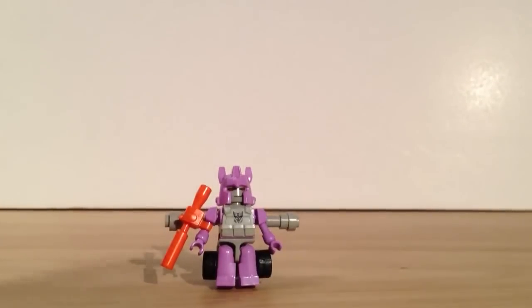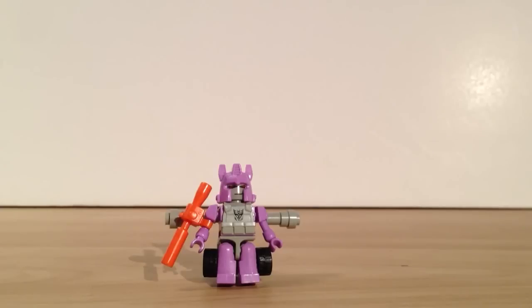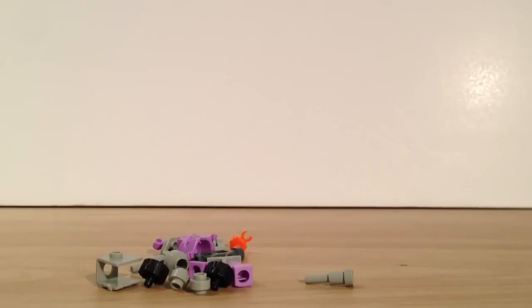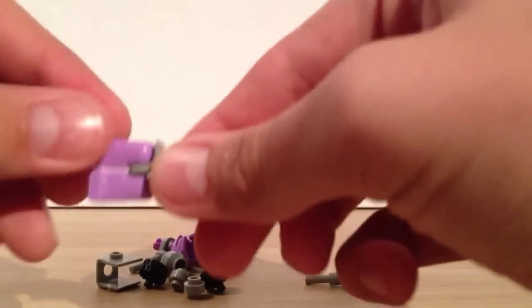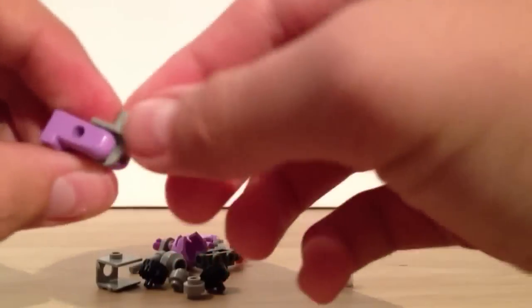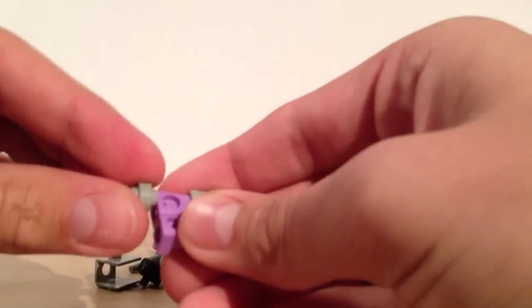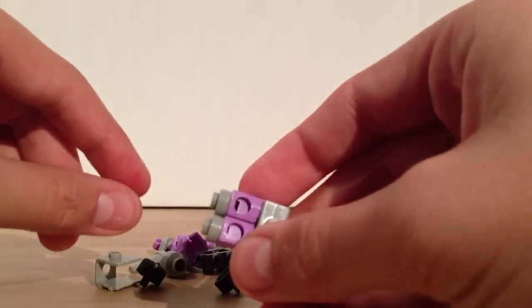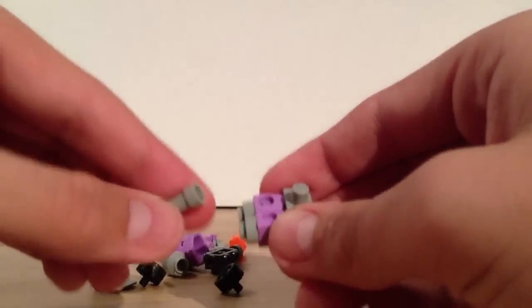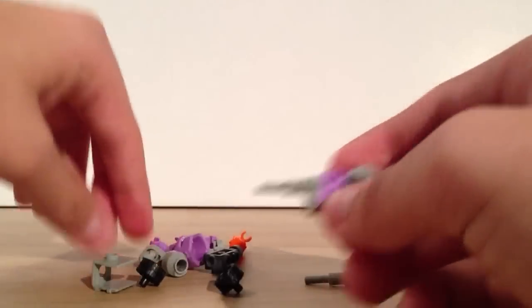Here we are back again, stripped down to the piece-by-piece configuration. We're going to build his vehicle mode now. You want to take his little leg pieces here and fold them backwards, so he's got his feet back like that. Then you take the little one-by-one bits here and plug those into the feet. Then you take these antennas and plug those into the end there.